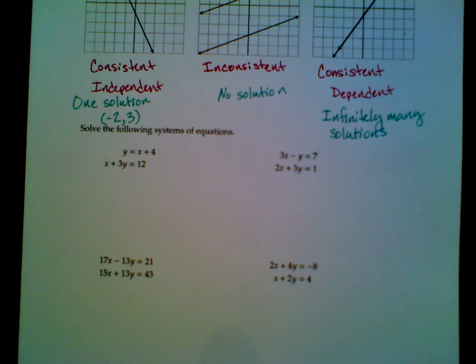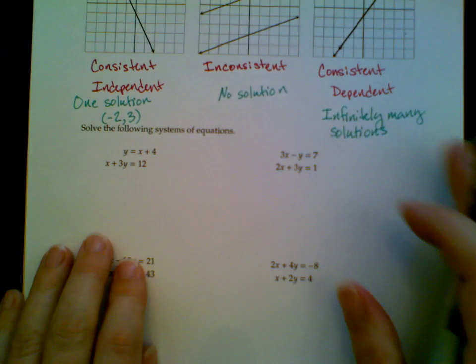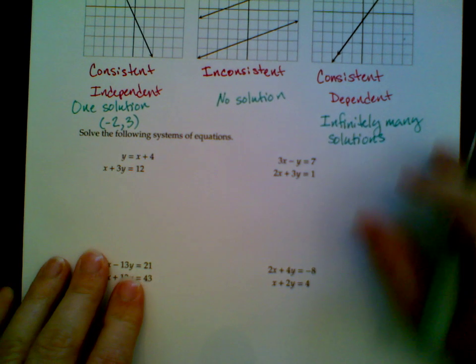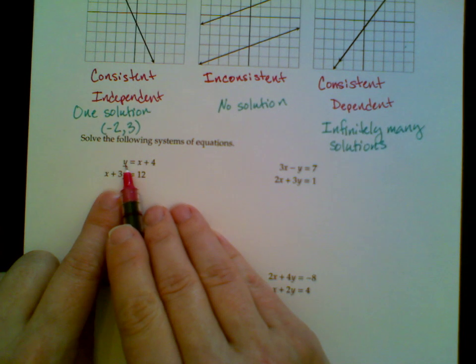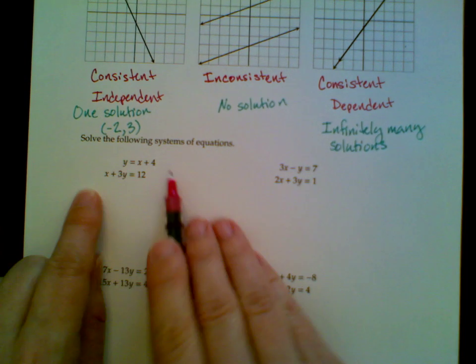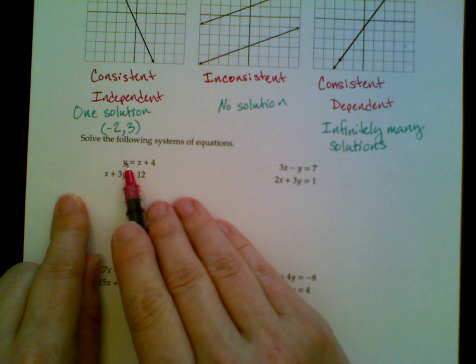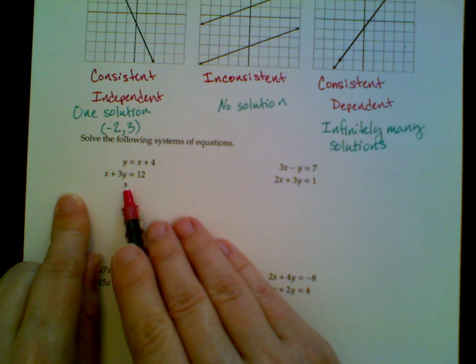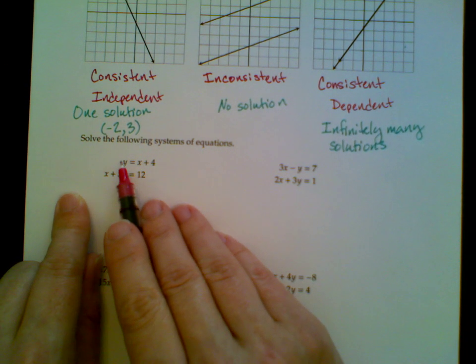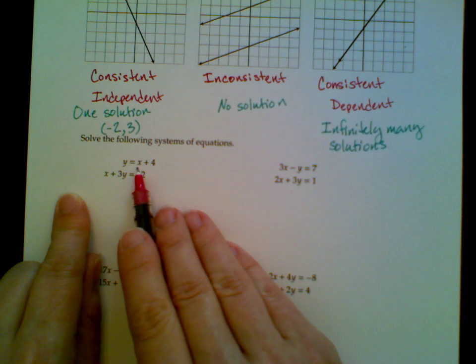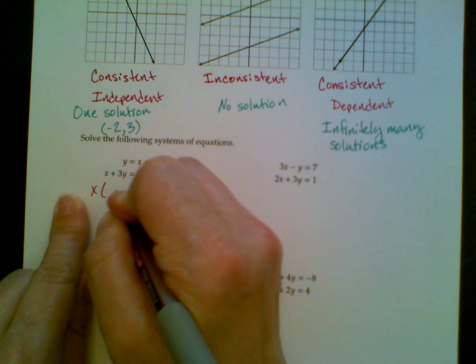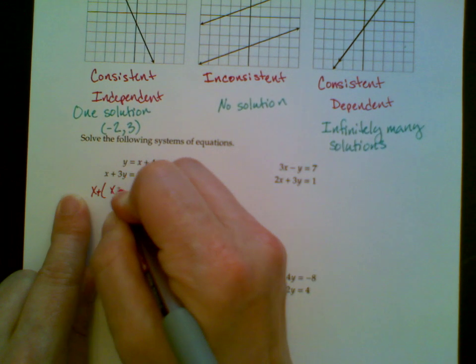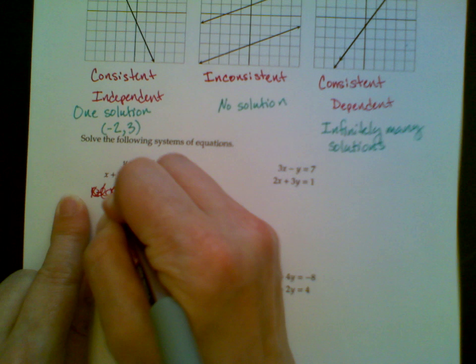The first one here, I'm going to solve using a method called substitution. Notice that, since this is a system, this y represents the exact same thing as this y. And this first y is equal to x plus 4, so this second y is also equal to x plus 4.